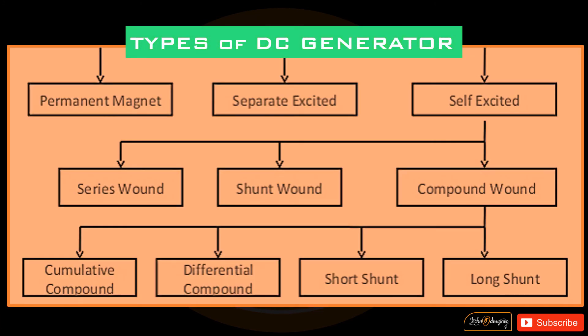Types of DC generators: DC generators are classified into three types — permanent magnet, separately excited, and self-excited. Self-excited is then divided into three types: series wound, shunt wound, and compound wound. Compound wound is further divided into four types: long shunt, short shunt, differential compound, and cumulative compound.